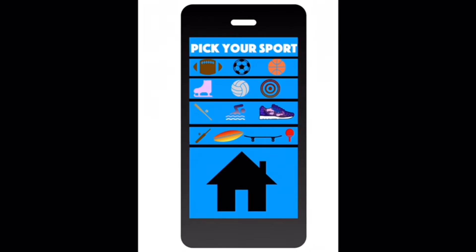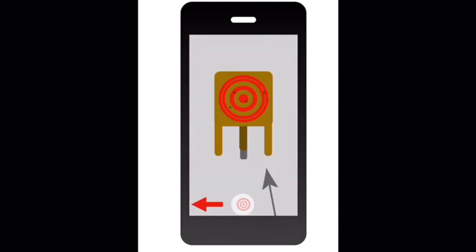Next, we're going to play archery. How you play this is: all you have to do is tap that little button, and then on the board, you just tap where you want the arrow to go — and then bullseye!